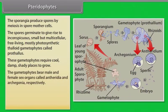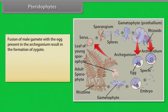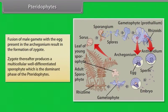The gametophytes bear male and female sex organs called antheridia and archegonia respectively. Water is required for transfer of antherozoids, the male gametes released from the antheridia, to the mouth of archegonium. Fusion of male gamete with the egg present in the archegonium results in the formation of zygote. Zygote thereafter produces a multicellular, well-differentiated sporophyte which is the dominant phase of the pteridophytes.